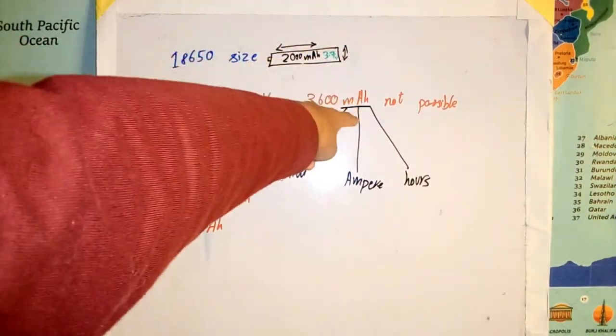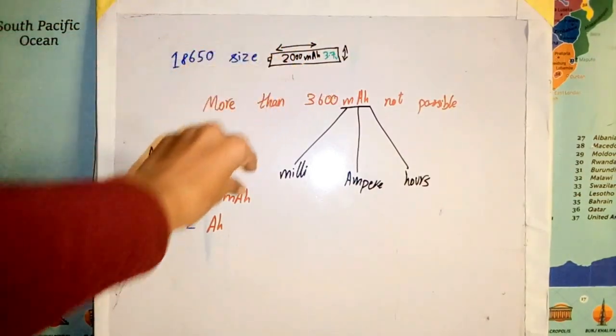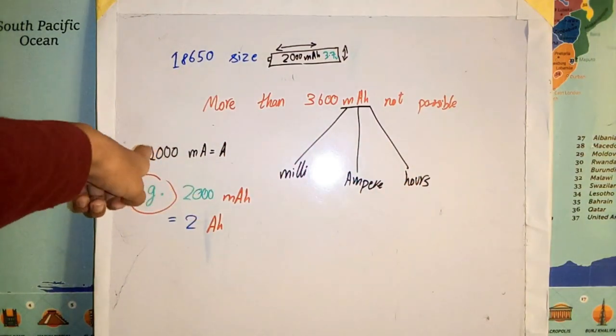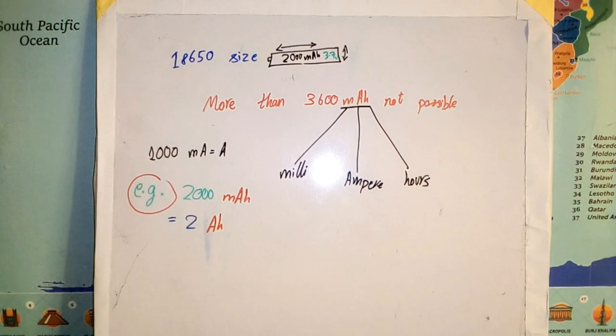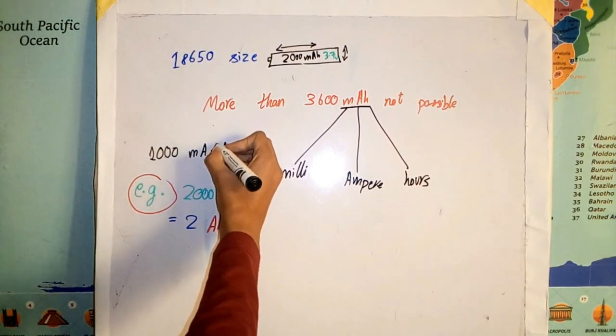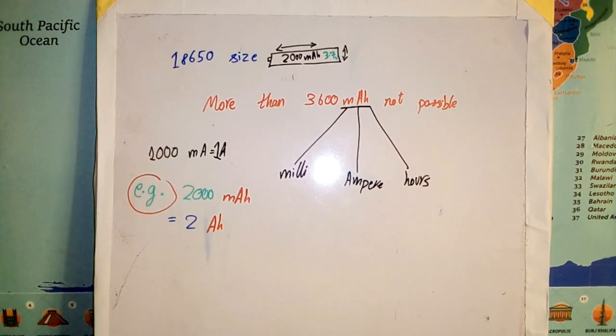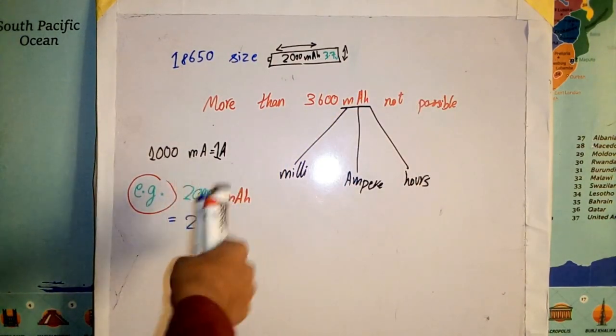It's written as mAh with a small m and capital A and H. Here I've written the full spellings. So 1,000 mAh equals 1 ampere hour. If you have a 2,000 mAh battery, that means it's the same as 2 ampere hours (Ah).